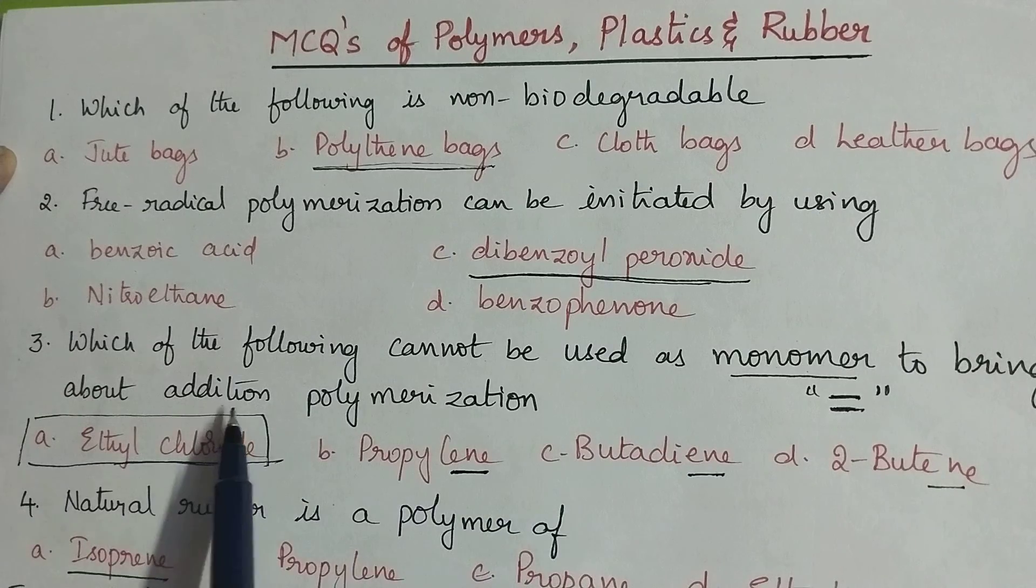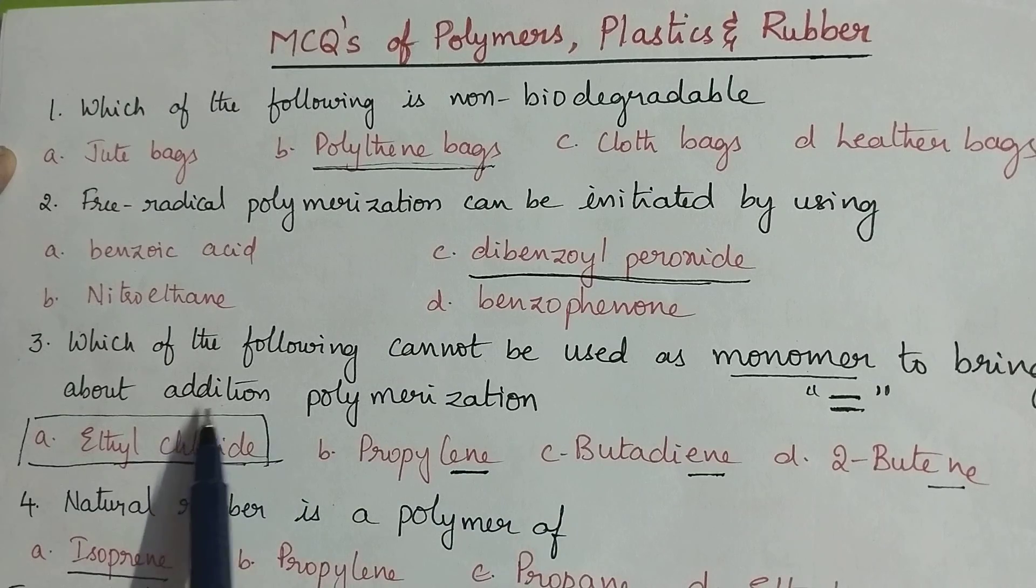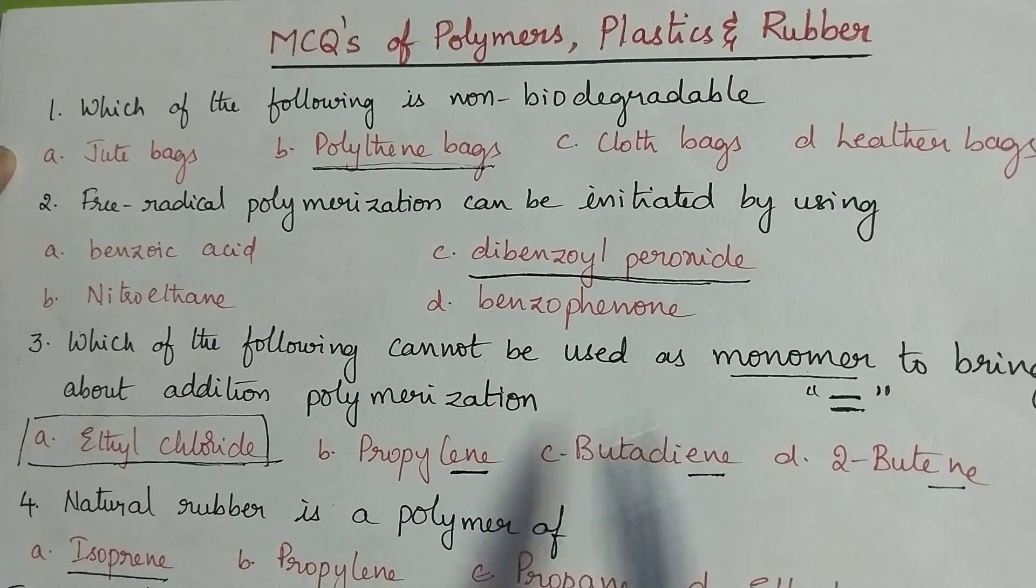Generally monomers containing double bonds participate in addition polymerization. A compound containing double bond ends with 'ene' end name, so ethyl chloride cannot act as a monomer.